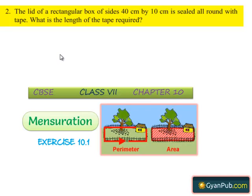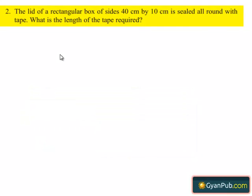Moving on to the second question in the first exercise. The given question is, the lid of a rectangular box of sides 40 cm by 10 cm is sealed all round with a tape. What is the length of the tape required?